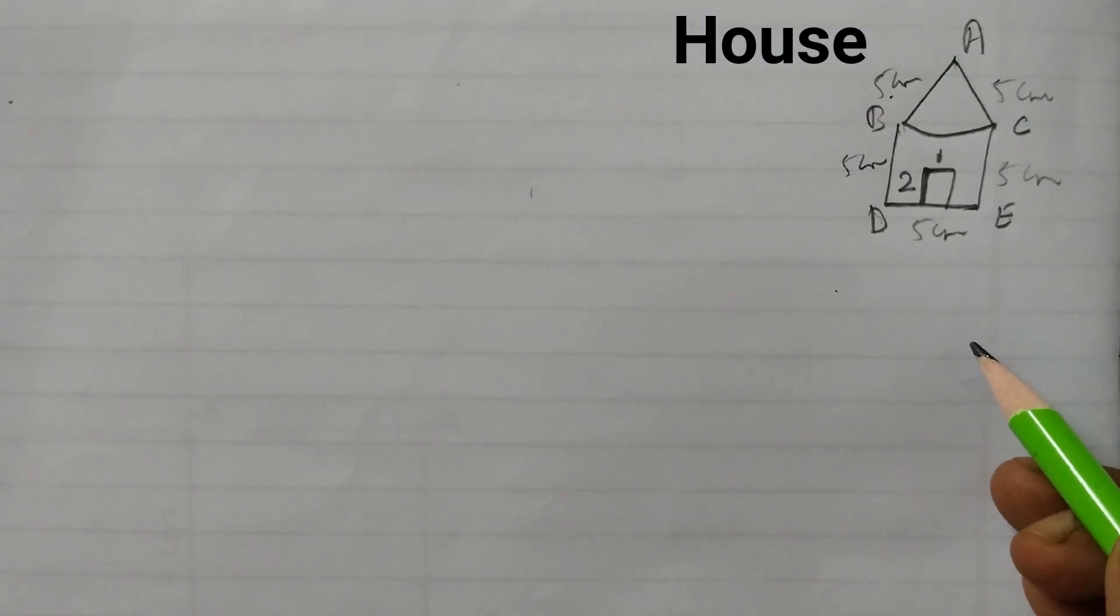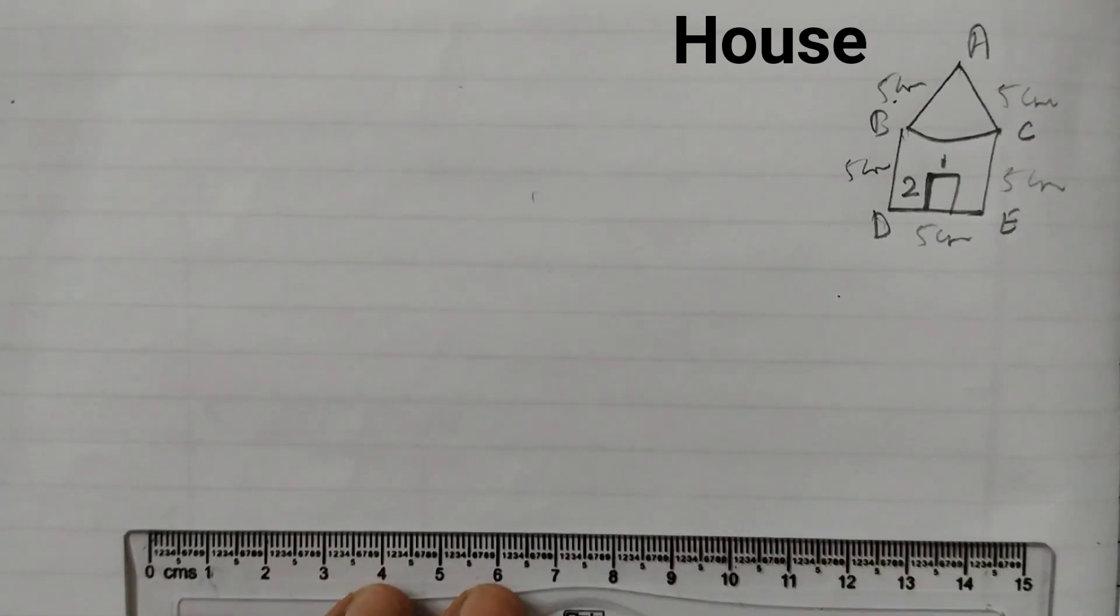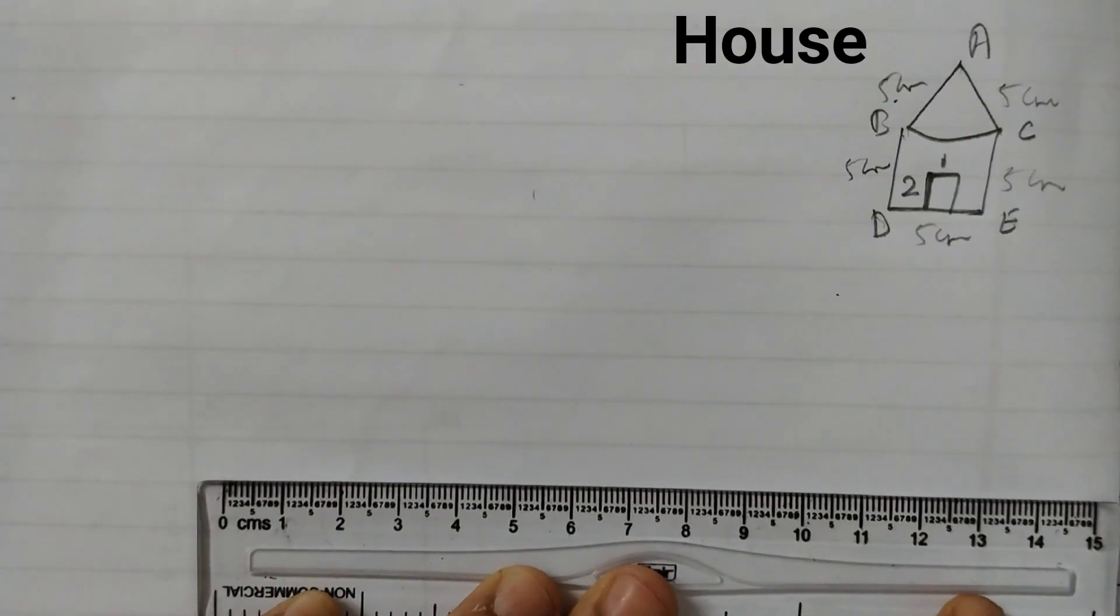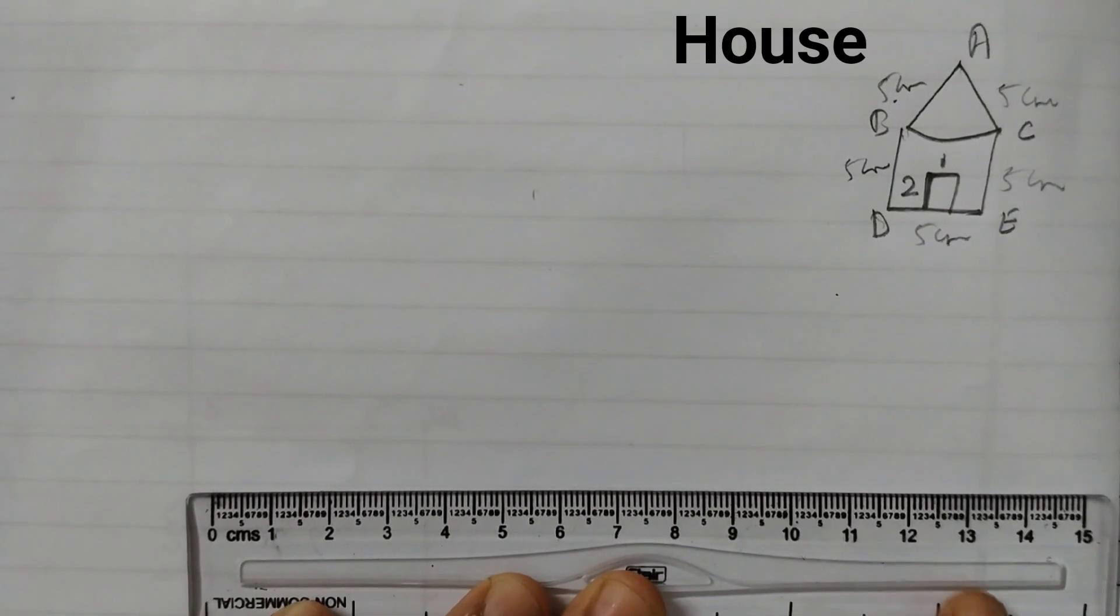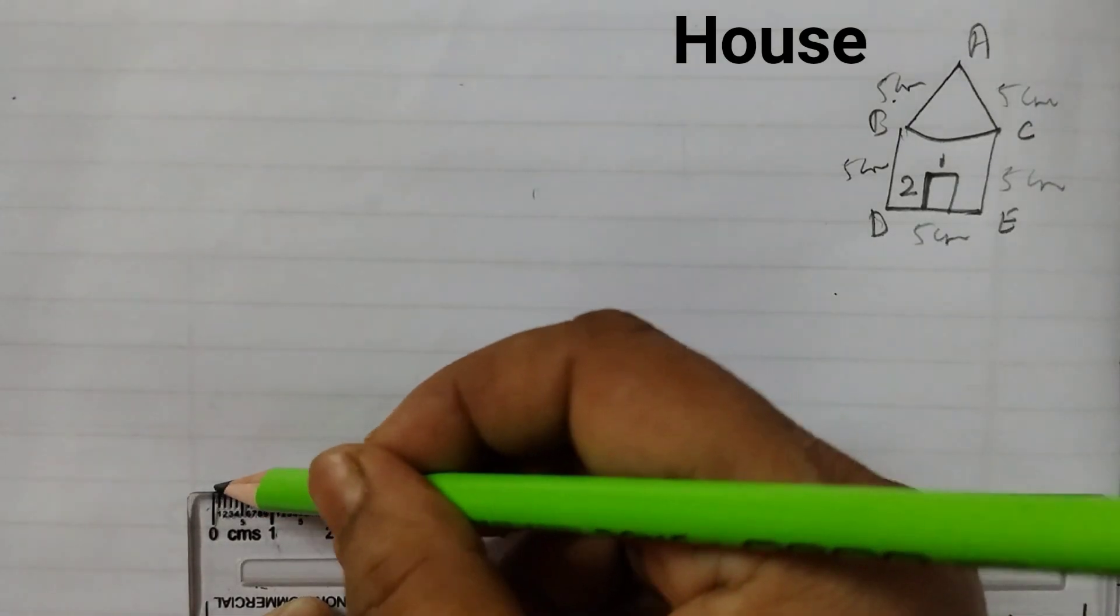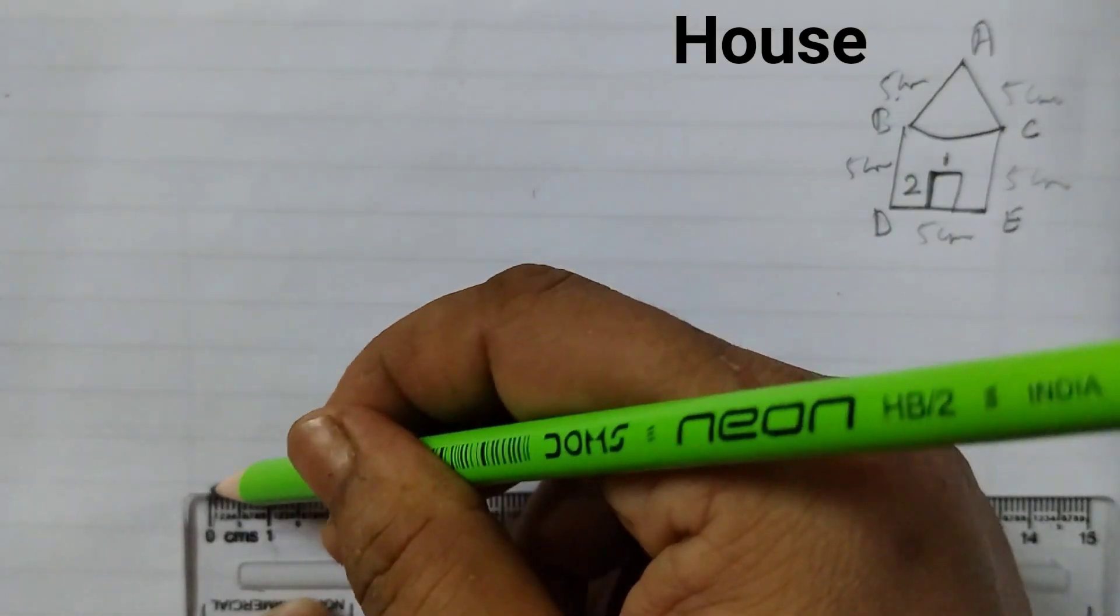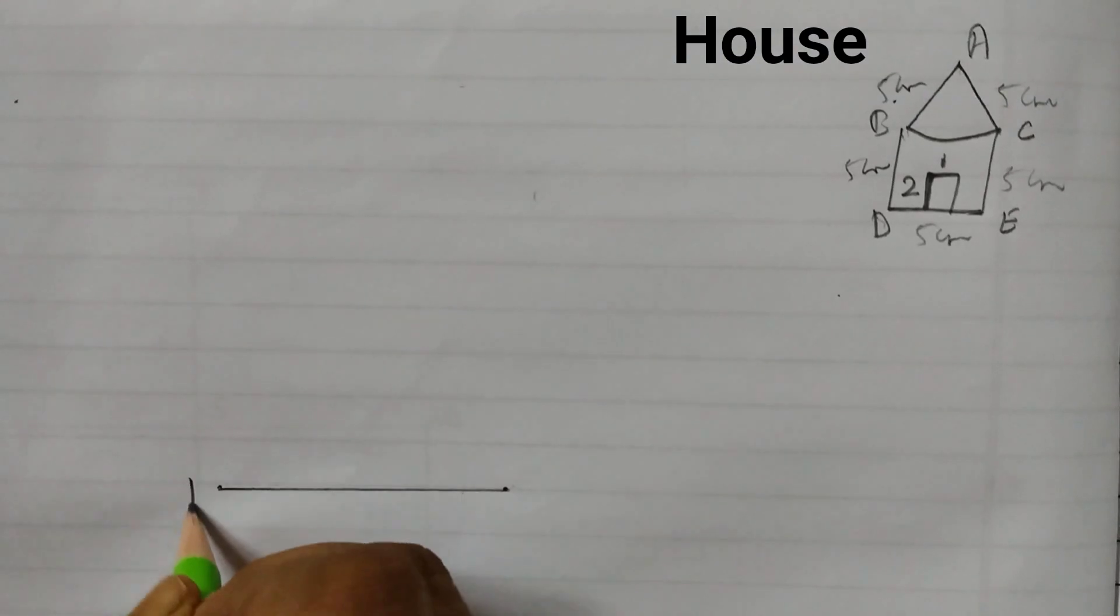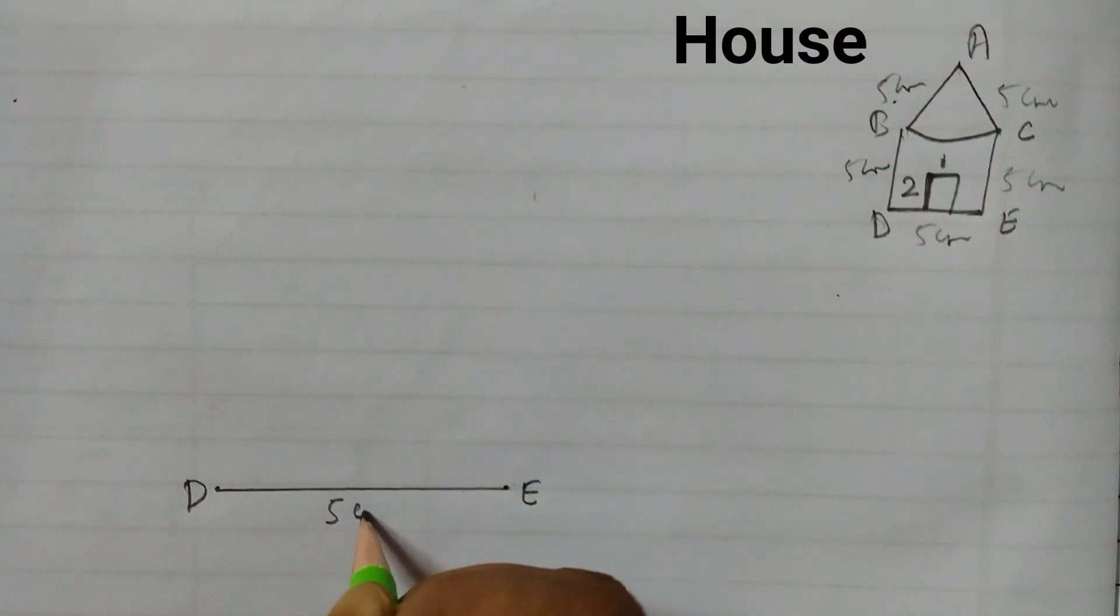So this is what we need to construct. Take a sharpened pencil and a ruler and first draw a line segment of 5 cm. So here I have taken a ruler and I will mark a point at 0 and 5 and join these 2 points. Label this as D, E and this is 5 cm.